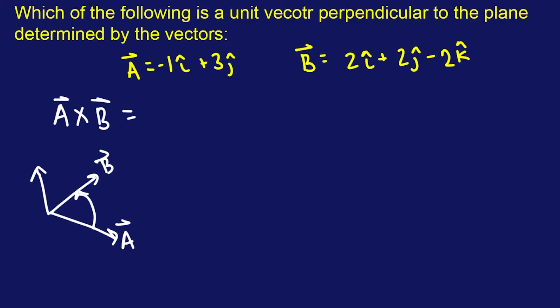And that's going to give you a normal vector, but it's not the unit vector. That is an additional secondary step that you need to perform before even solving this problem. But let's solve the cross product first. So we're going to do the determinant method. We're going to put I, J, and K here.